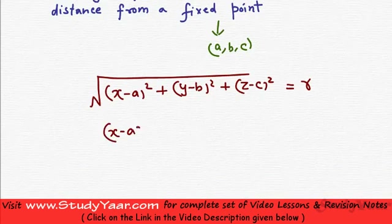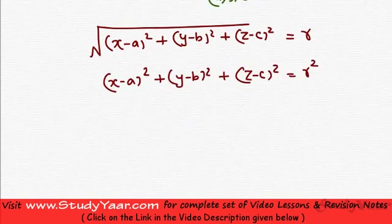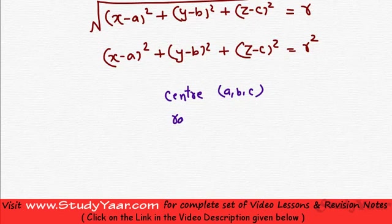And if I now take square on both sides, what I am getting is (x minus a) square plus (y minus b) square plus (z minus c) square equals r square. And this is the equation of a sphere having its center at (a, b, c) and having its radius as r. So the equation of a sphere is (x minus a) square plus (y minus b) square plus (z minus c) square equal to r square.